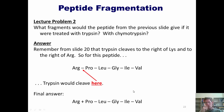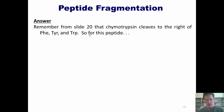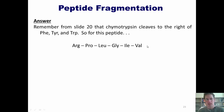Let's answer the next question for chymotrypsin. We should remember that chymotrypsin cleaves peptides to the right of phenylalanine, tyrosine, and tryptophan. So for our peptide in question, we scan down here and try to find phenylalanine, tyrosine, or tryptophan. We scan and scan and scan and you can see that none of these amino acids are found in this peptide.